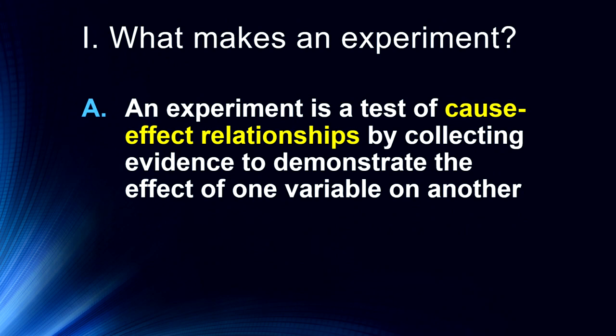An experiment is a test of a cause and effect relationship, which we can establish by collecting evidence to demonstrate the effect of one variable on another. The biggest difference between the other types of research designs we've talked about and this one is we can actually establish a cause and effect relationship by manipulating an independent variable and seeing how it has an effect on a dependent variable. Any change or lack of change in the dependent variable will be due to the independent variable.